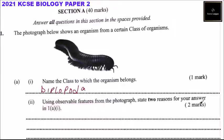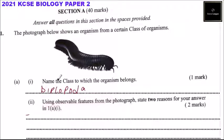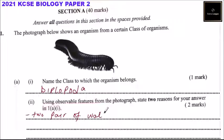Roman numeral two asks: using observable features from the photograph, state two reasons for your answer in 1A Roman 1. One observable feature is that you can see it has two pairs of short legs per segment — every segment has two pairs of legs. So you can say two pairs of walking legs per segment.